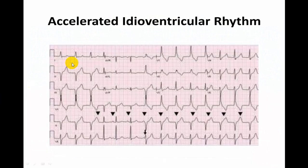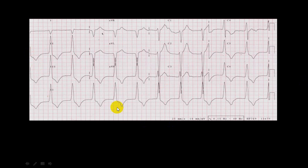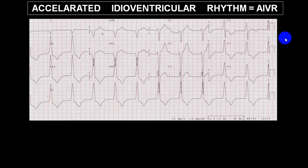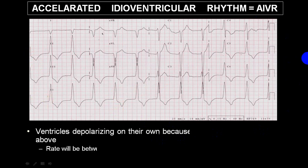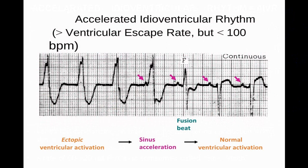Another confusing entity is accelerated idioventricular rhythm (AIVR). With narrow complex AIVR close to rate 100, it can mislead you. With broad complex AIVR at rate less than 100 but more than 40, it is sometimes misdiagnosed. You may also see a fusion beat — a mixture of a ventricular beat with a normal sinus beat — and fusion beats help identify ventricular tachyarrhythmia.